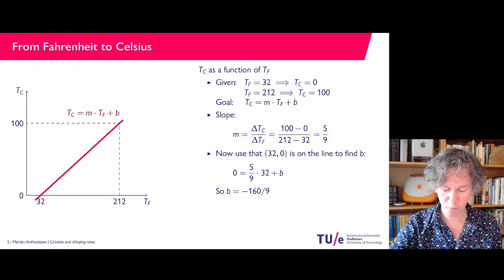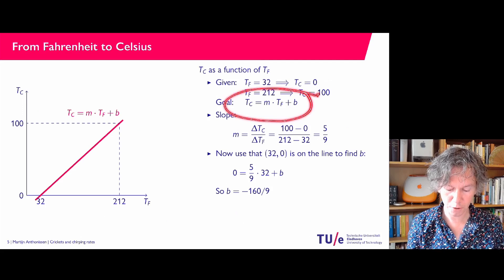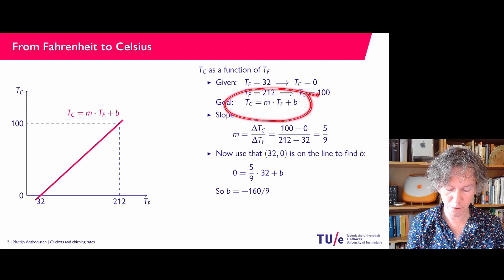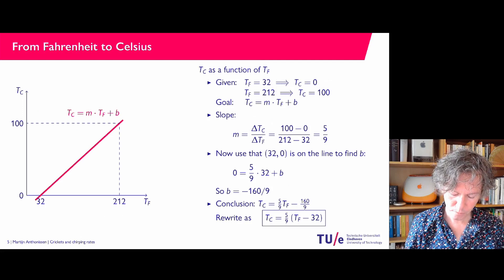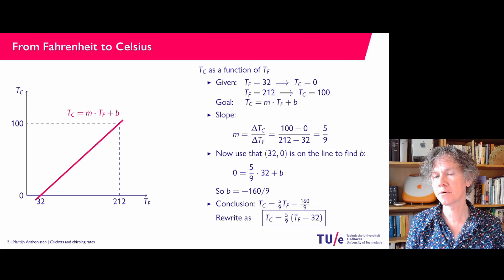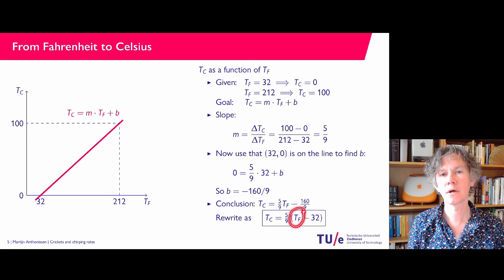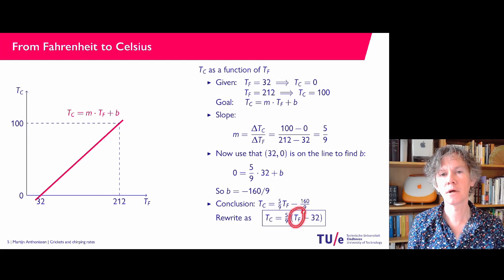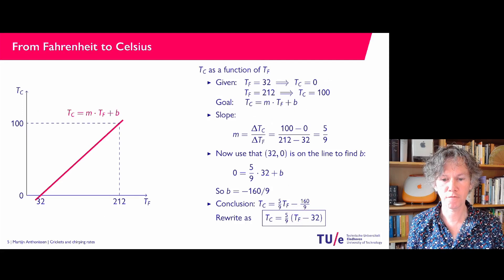Then I would like to find B. If you plug in Tf equals 32 and Tc equals 0 into the equation, you find B equals minus 160 over 9. Plugging that in and simplifying, you get the relation you may have seen before: to convert Fahrenheit to Celsius, subtract 32, then multiply by 5 over 9. So Tc equals 5/9 times (Tf minus 32).